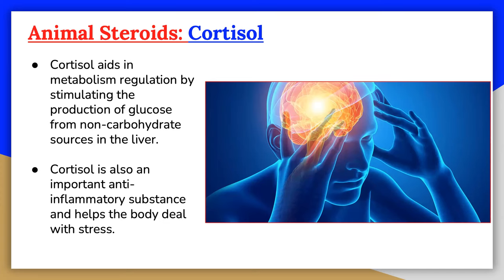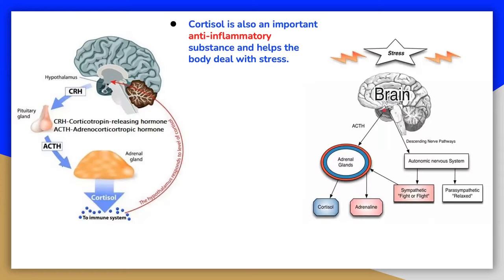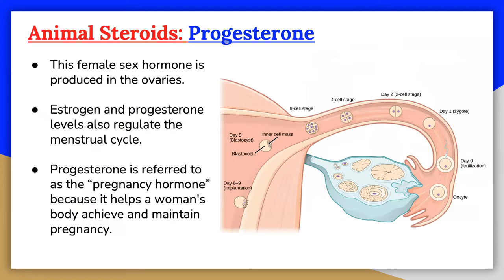Cortisol is a steroid hormone made in the cortex of the adrenal glands. Almost every cell contains receptors for cortisol, so it can have many different actions depending on which cells it acts upon. These effects include controlling the body's blood sugar levels and regulating metabolism, acting as an anti-inflammatory, influencing memory formation, controlling salt and water balance, influencing blood pressure, and helping the development of the fetus. Cortisol is often called the stress hormone because of its connection to the stress response; however, cortisol is much more than just a hormone released during stress.